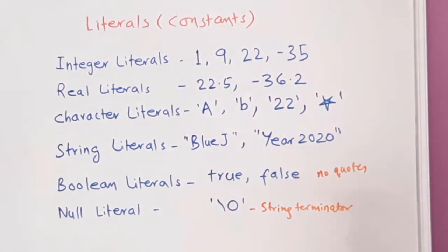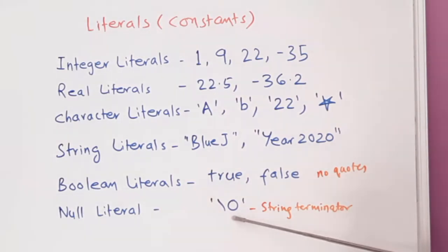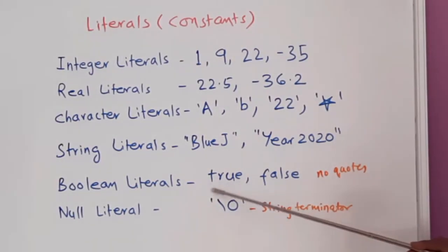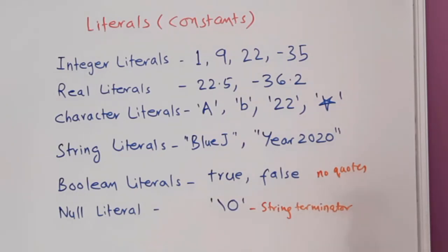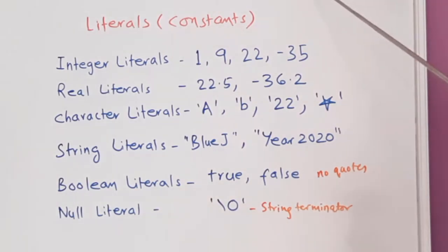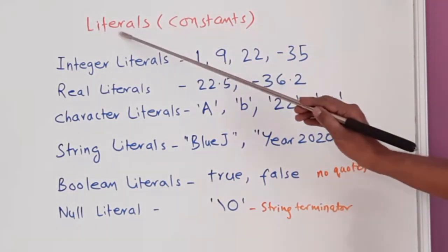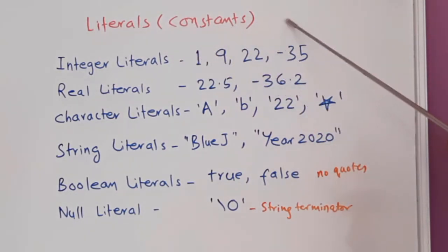Then we have null literals. Backslash zero ('\0') — it is 0, not the letter O — in single quotes is called a string terminator. These are all the literals or constants as tokens in Java.